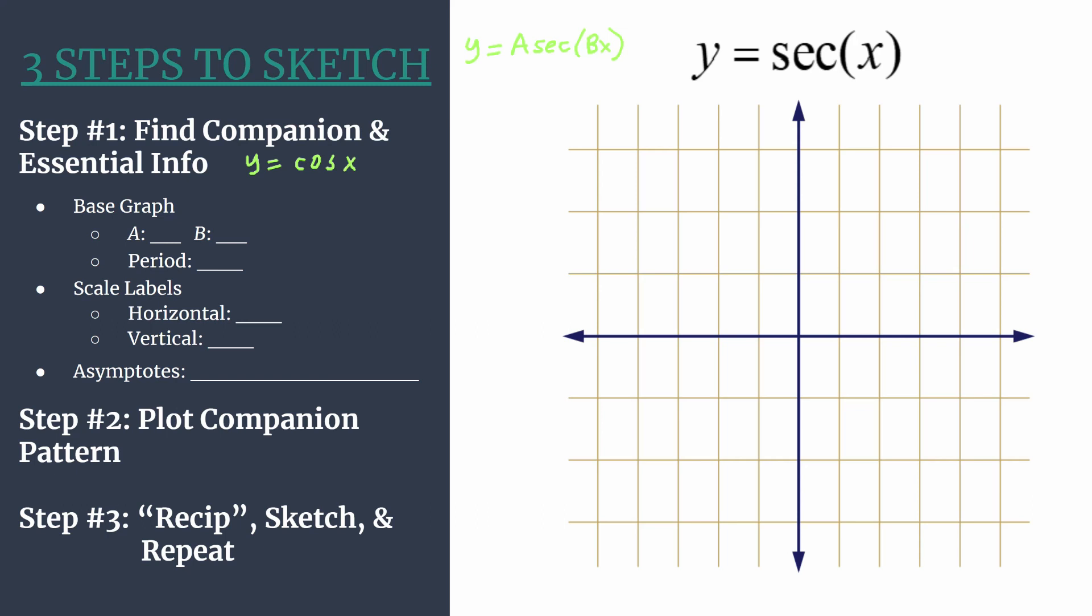Okay so now let's find the information for this companion graph. We see that a is clearly one, it's an understood one as the leading coefficient and b is the coefficient of x which is also one. So that tells us we should have one cycle of our secant graph, our companion cosine graph, and then of course still of our secant graph that'll happen between zero and two pi.